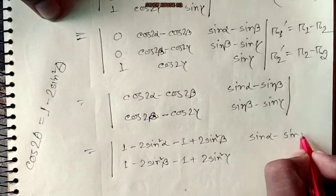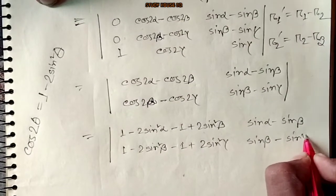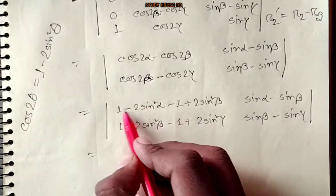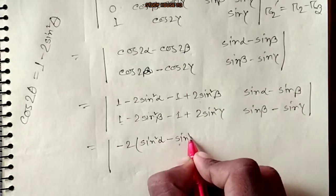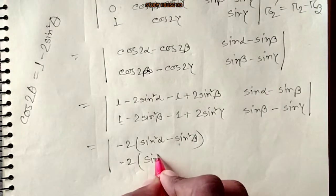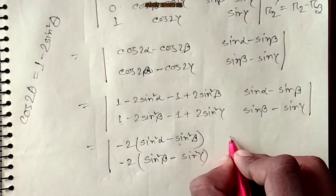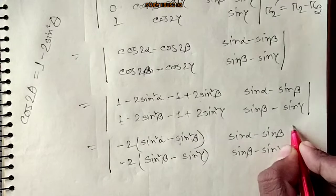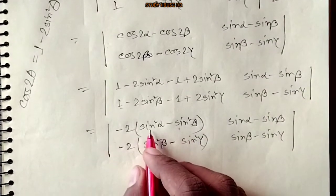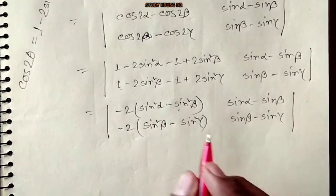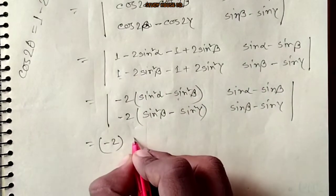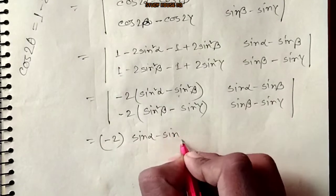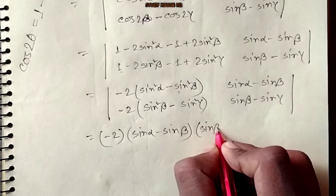The same: 1 minus 2sin²θ minus 1 plus 2sin²γ. Sign α minus sign β, sign β minus sign γ. Minus 2 common, minus 2 common: sin²α minus sin²β, minus sin²γ; sin α minus sin β, sin β minus sin γ.